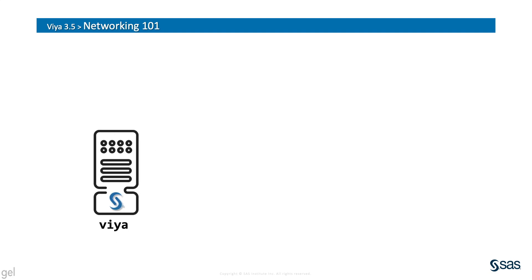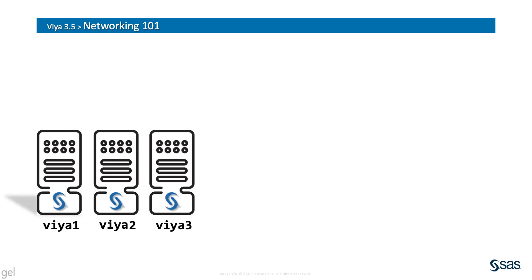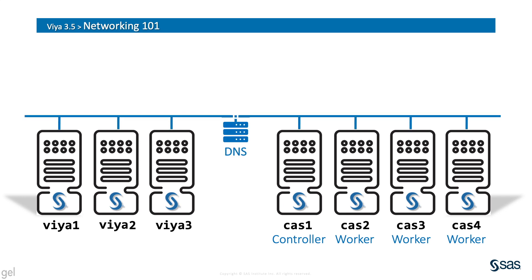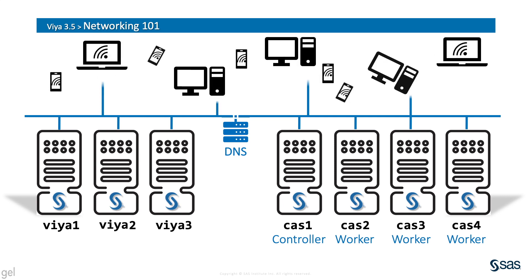We've got a single server machine for SAS Viya software. The topics discussed today apply to single machines, but they're more interesting when Viya is deployed on multiple hosts, and even more so when SAS Cloud Analytic Services, or CAS, is deployed on multiple hosts as well. CAS hosts take on different roles such as controllers and workers. Hook them all up on the network so they can talk to each other, and don't forget that Viya users will need access over the network to Viya software services as well.